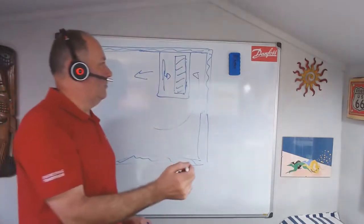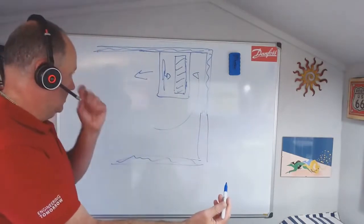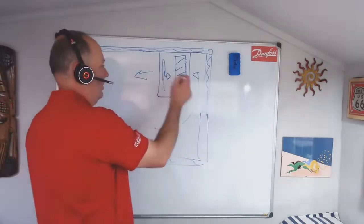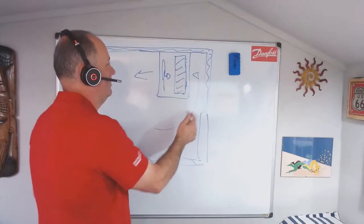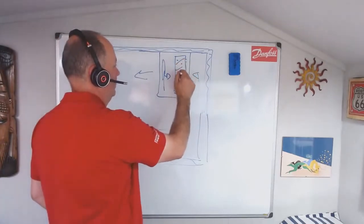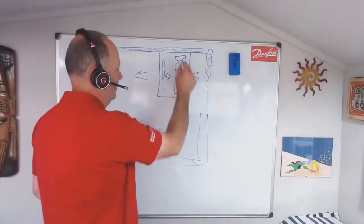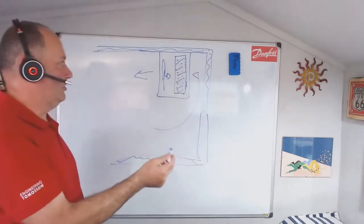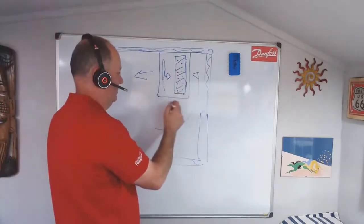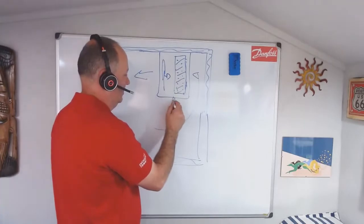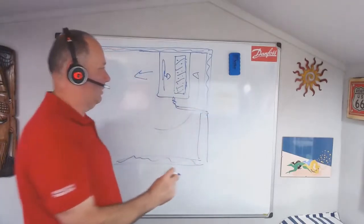When we defrost, basically we turn the fan off, we turn the refrigeration system off, and then we have electrical heaters within the coil that we energize so they heat up and they melt all that ice. And as we said it comes out the drain and goes away.